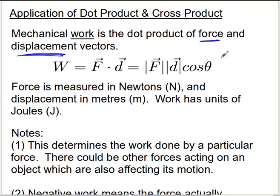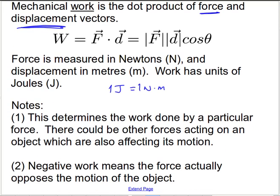For those of you who've taken some physics, you probably recognize this form of work. The magnitude of the force, the magnitude of the displacement, times the cosine of the angle between them. We measure force in newtons, and we measure the displacement in meters, the units of work are joules. So one joule is equal to one newton times one meter, or what's known as a newton meter.